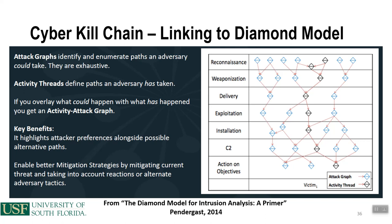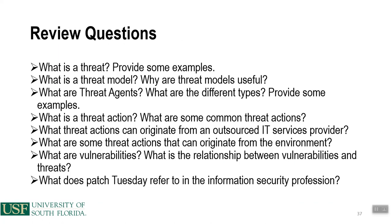This topic goes really deep, and additional materials are available on request. The most important thing is understanding threats and vulnerabilities and how they link with the information security model as a whole. To summarize this lecture: we covered threats, the threat model, the different types of threat agents — external, internal, and partners — the different threat actions available, what vulnerabilities are, the types of vulnerability scanners and their value, and an introduction to the diamond model and cyber kill chain.